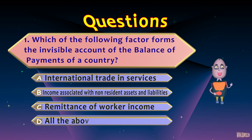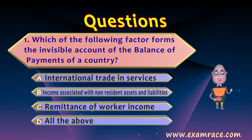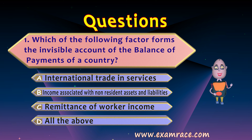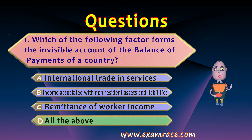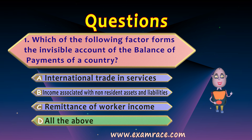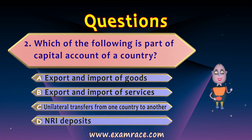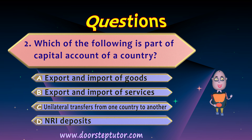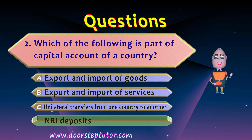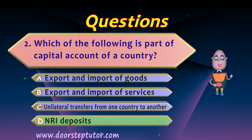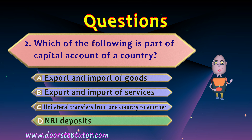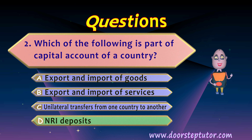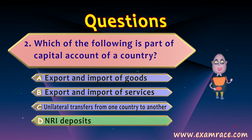Let us now practice. Question one: Which of the following factors form the invisible account of the balance of payments? The answer includes international trade in services, income associated with non-resident assets and liabilities, and remittances of worker income — all of them are correct as they are all invisible items. Question two: Which of the following is part of the capital account? NRI deposits are the correct answer, as they represent an asset for the depositor and a liability for India. Exports and imports of goods, services, and unilateral transfers all form part of the current account.